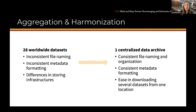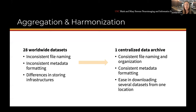Right now we have 28 datasets from around the world. As you can imagine, there is some inconsistent file naming across these different datasets, inconsistent metadata formatting, and differences in storing infrastructures. What we've done is put all of these together into one centralized data archive with consistent file naming and organization, consistent metadata formatting, and ease in downloading several datasets from one location using Aspera.